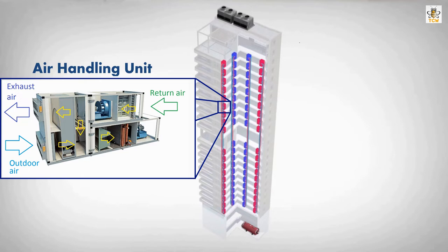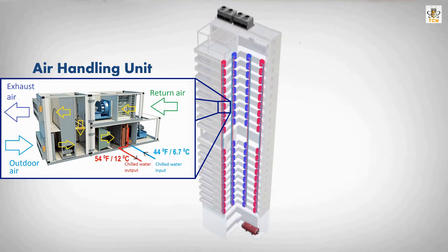The mixture of outdoor air and return air flows to the cooling coil. Low temperature water enters the cooling coil, absorbs heat from the air, and becomes hotter. This cooling water is called chilled water. The chilled water temperature is 44 degrees Fahrenheit or 6.7 degrees Celsius, and after absorbing heat from the air, it rises to 54 degrees Fahrenheit or 12 degrees Celsius.